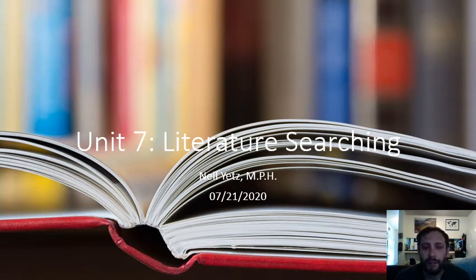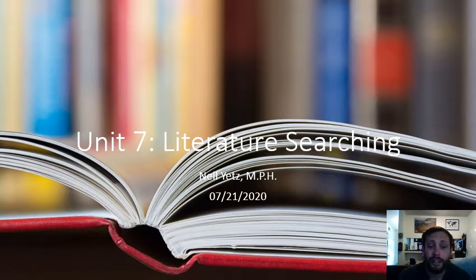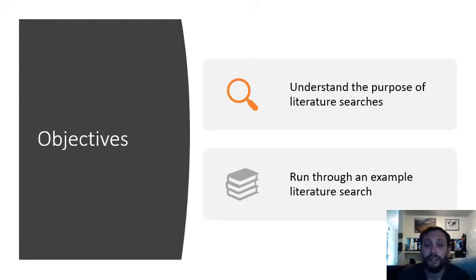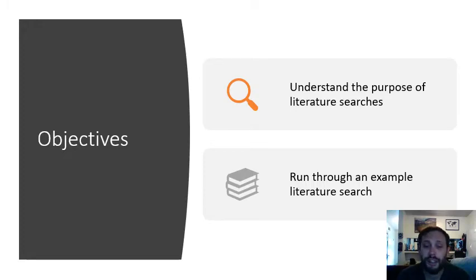Hey students, welcome to unit number seven where we're going to be discussing literature searching. This is going to be a relatively long lecture because we are covering unit seven and unit eight. Our objectives for today for unit seven are: one, understand the purposes of literature searches, and two, we're going to run through a quick example of how to perform a literature search, and some problems you might run into and ways to get through them.